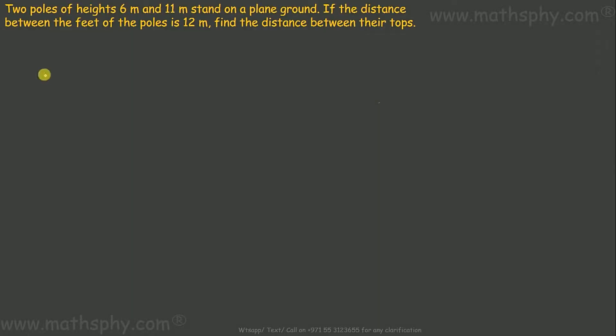I have two poles - this one is 6 meters and the second one is 11 meters, so I'll write it as pole 1, pole 2. If the distance between the feet of the poles is 12 meters, this means this